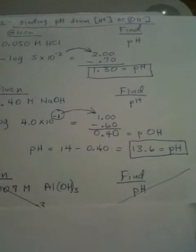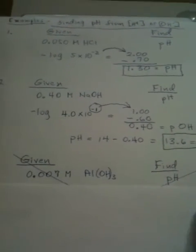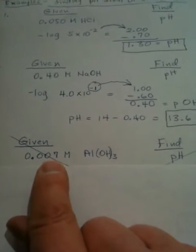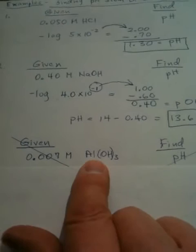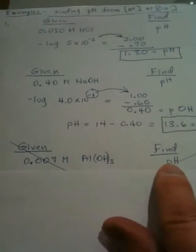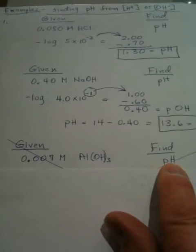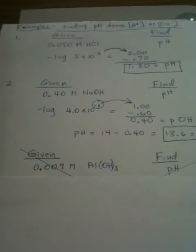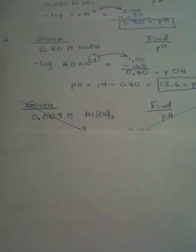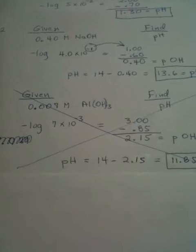Now, this next problem deals with aluminum hydroxide, which has three hydroxide ions. And, we are given this as the molarity of the aluminum hydroxide. Well, looky here. We're again asked to find the pH, not the pOH. Now, this is the way most people would solve this problem if they're not keeping their head on straight.